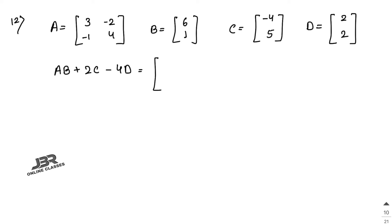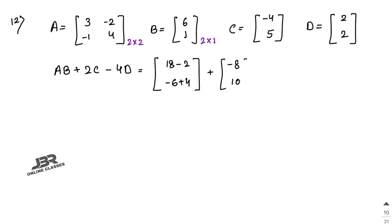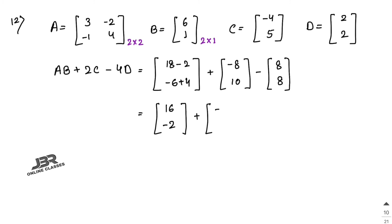Matrix A is 2×2 and matrix B is 2×1, so AB will be a 2×1 matrix. Calculate AB: 3×6 + (−2)×1 = 18 − 2 = 16, and (−1)×6 + 4×1 = −6 + 4 = −2. So AB = [16; -2]. Then 2C = [−8; 10], and 4D = [8; 8].